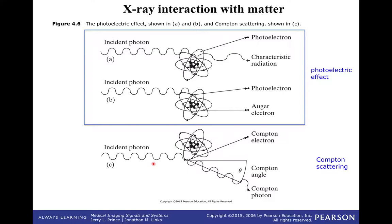You can think of the photoelectric effect as the incident photon interacting chemically with the material itself — with the electron shells of molecules in fat, bone, liver, blood, contrast agent, and so on. So the X-ray is coming through the patient.